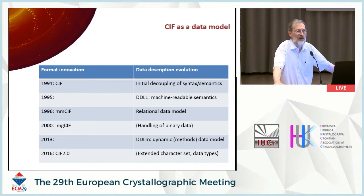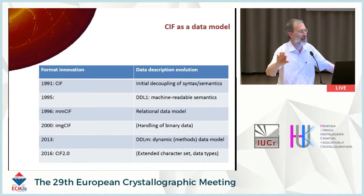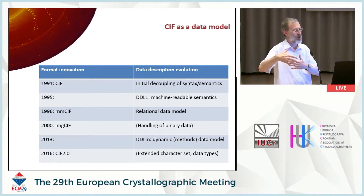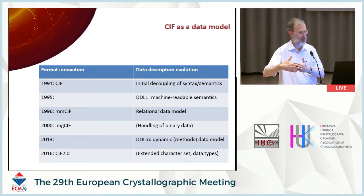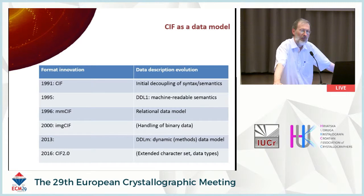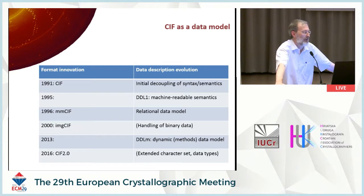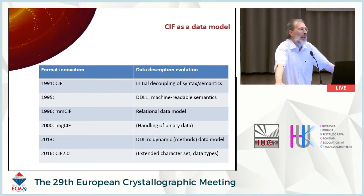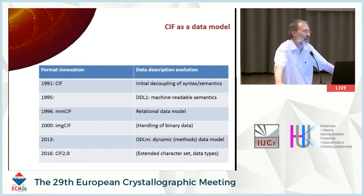So at the syntactic level, CIF has been very stable — it's really only after 25 years that this extension to the syntax is coming in. But during that time its internal structure has changed a little bit, and the decoupling of the semantics from the syntax has proceeded in a number of stages. The initial paper was a little bit vague in that decoupling — both syntax and semantics were presented together. By the mid-90s, DDL1 decoupled the semantics, giving information about the meaning and relationship between data names in a completely separate, machine-readable form using the same syntactic structure.